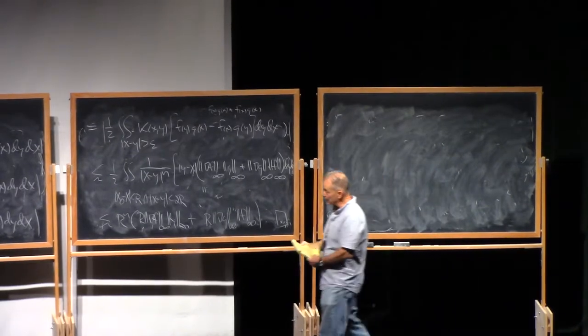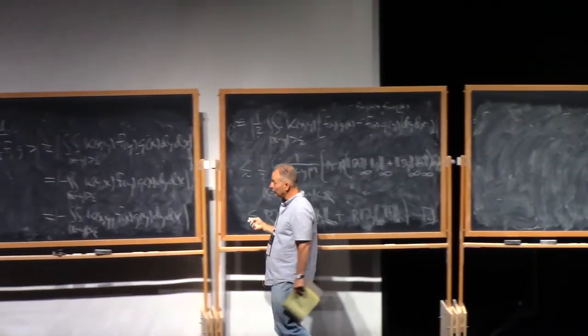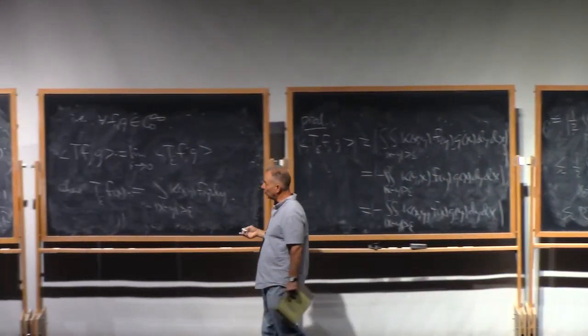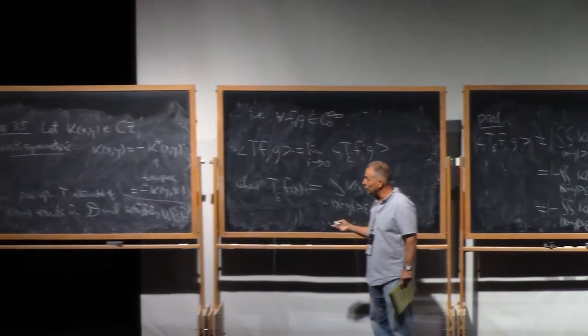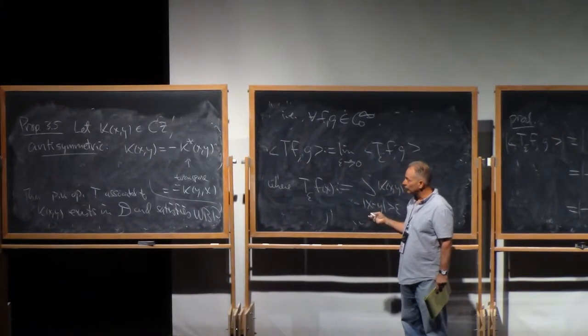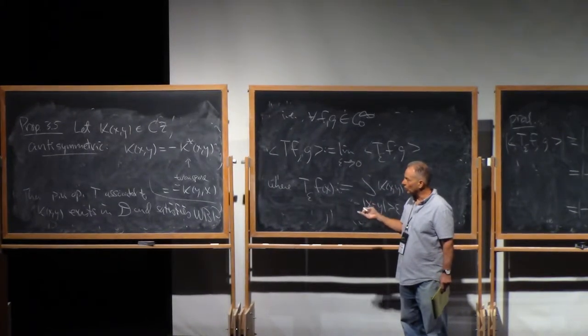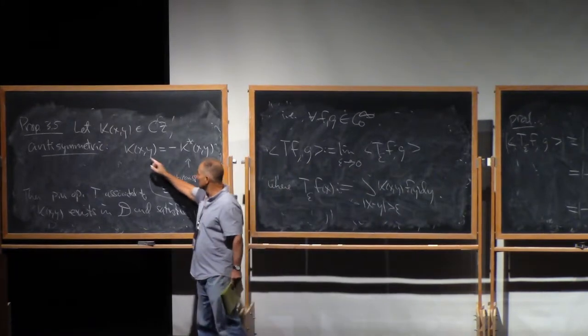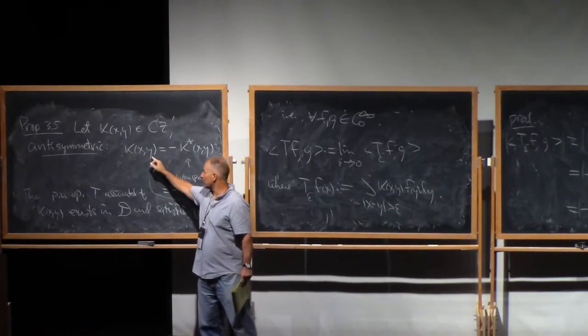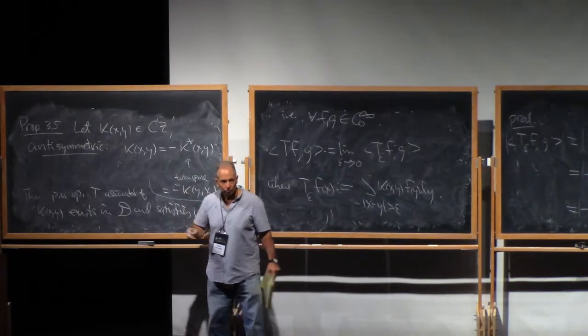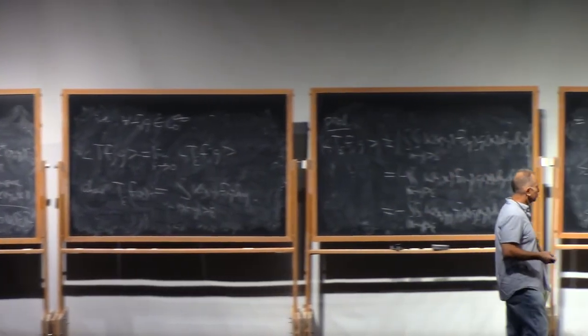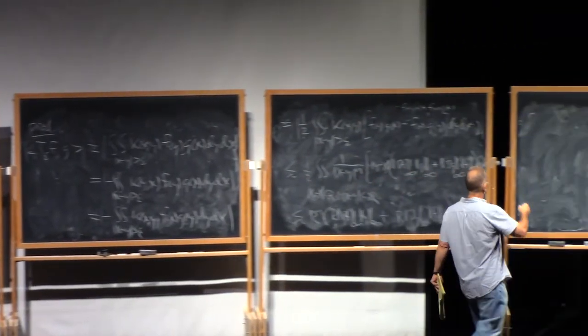So maybe one more comment is in order. Remember the examples that I gave you. The Cauchy integral and Lipschitz curve. The Calderón commutators. What you notice is that they actually do satisfy this antisymmetry condition. If you just interchange the roles of x and y, all you do is introduce a minus sign. So that's worth remarking.